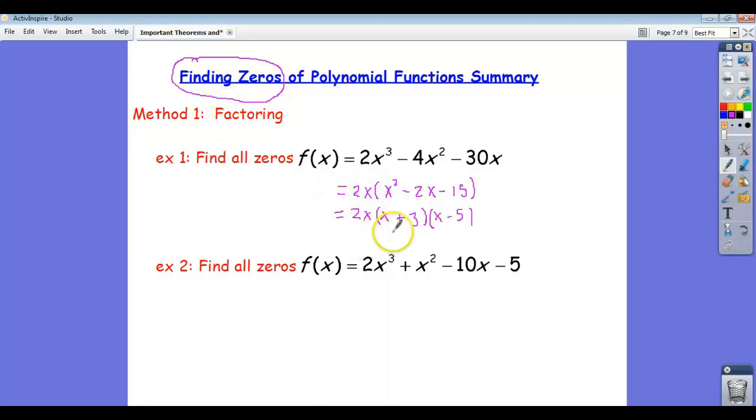So the zeros are, well, this factor here, you set 2x equal to 0. That means x equals 0. Students miss that one a lot. Zero is the zero that you plug in to that term to get a zero. A lot of zeros in that statement, but, and negative 3 and a 5.